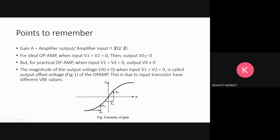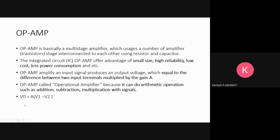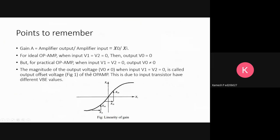But in practical op-amp, V naught is not equal to zero. The magnitude of the output voltage when input V1 equals V2 equals zero is called output offset voltage. This V naught value which is not equal to zero is called the output offset voltage, and this is due to the input transistors having different VBE values.